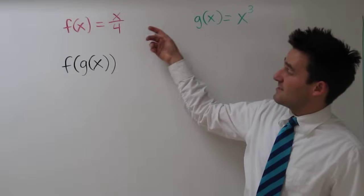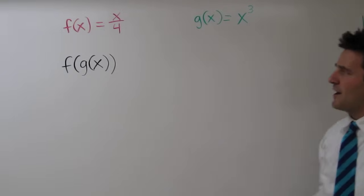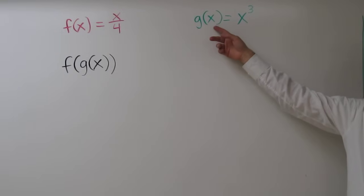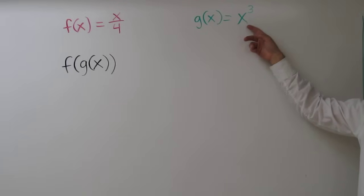f in terms of x is defined as x divided by 4. g in terms of x is defined as x cubed.